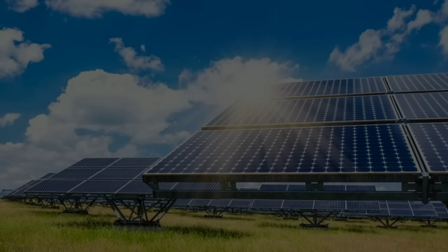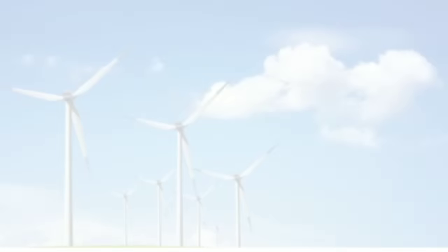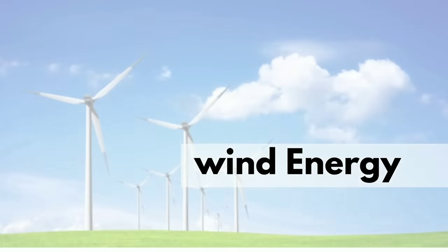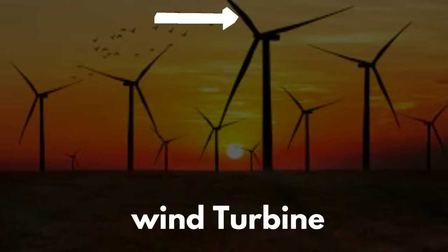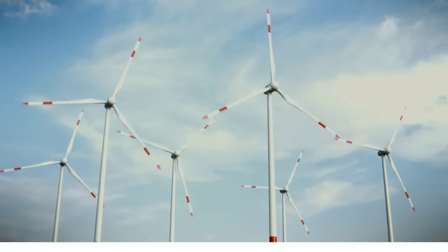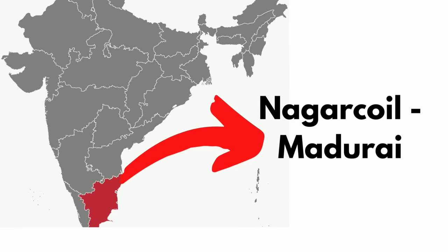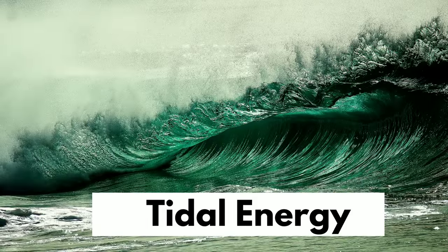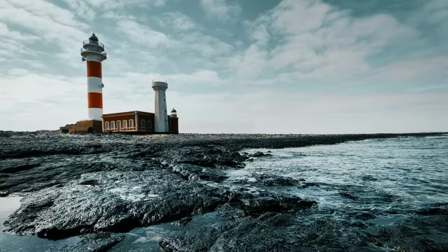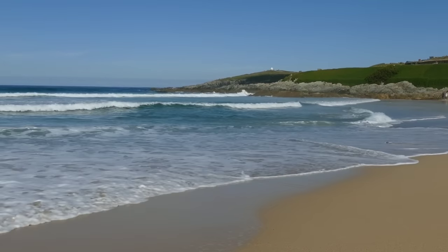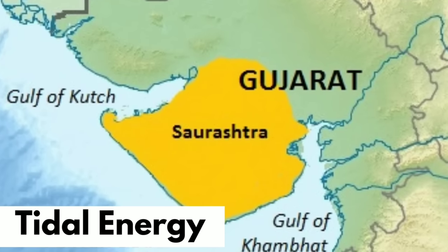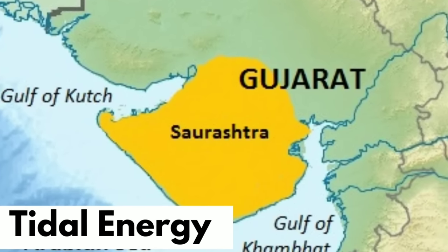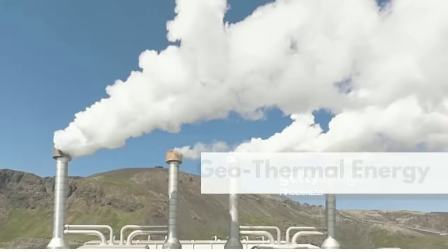Wind energy is used to generate electricity, with wind turbines playing a very important role. The largest wind farm cluster is in Tamil Nadu, from Nagarcoil to Madurai. Tidal energy converts tidal or hydro power into electricity. The Gulf of Khambhat and the Gulf of Kutch in Gujarat provide ideal conditions to utilize tidal energy.